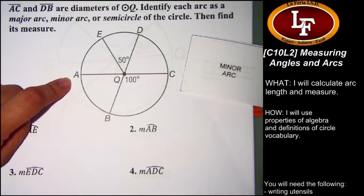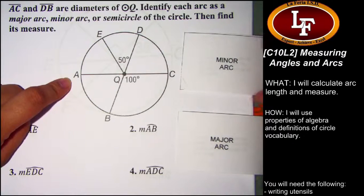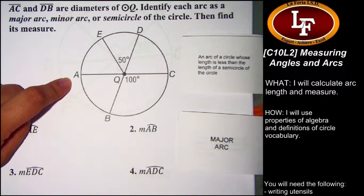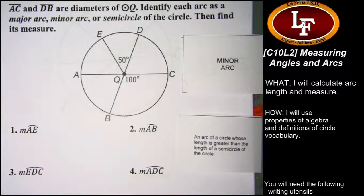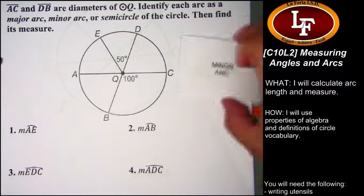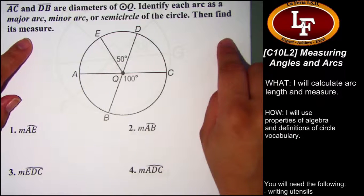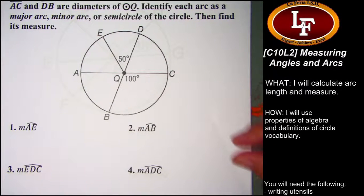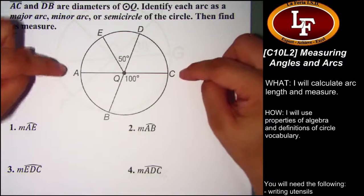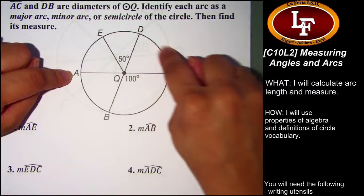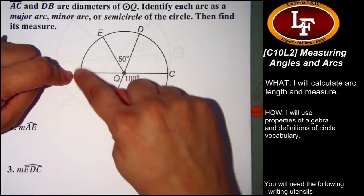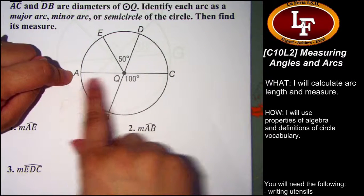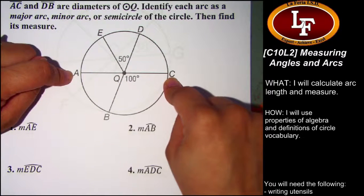Minor and major arcs are talked about in reference to the semicircle. A minor arc is less than a semicircle, and a major arc is greater than the semicircle. The measure of an arc is the same as the central angle that created it. Since a semicircle has a straight angle, its measure is 180 degrees.